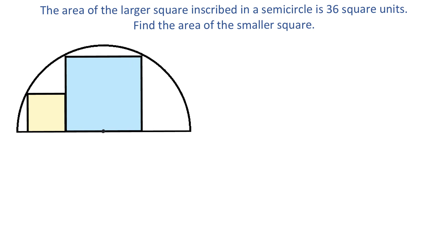In this figure we have a semicircle and an inscribed square whose area is 36 square units. We need to find the area of the smaller square. There are multiple ways of solving this problem and in this video we will explore one of them.